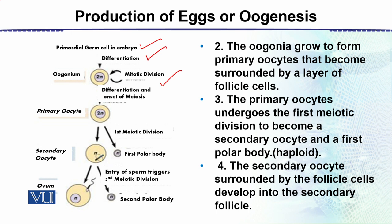Now we need to see how these diploid cells are transformed into haploid cells. When haploid cells form, the number of chromosomes is reduced to half. This is the onset of meiosis — the start of meiosis — and the result is the primary oocyte, which is the early stage of egg formation.